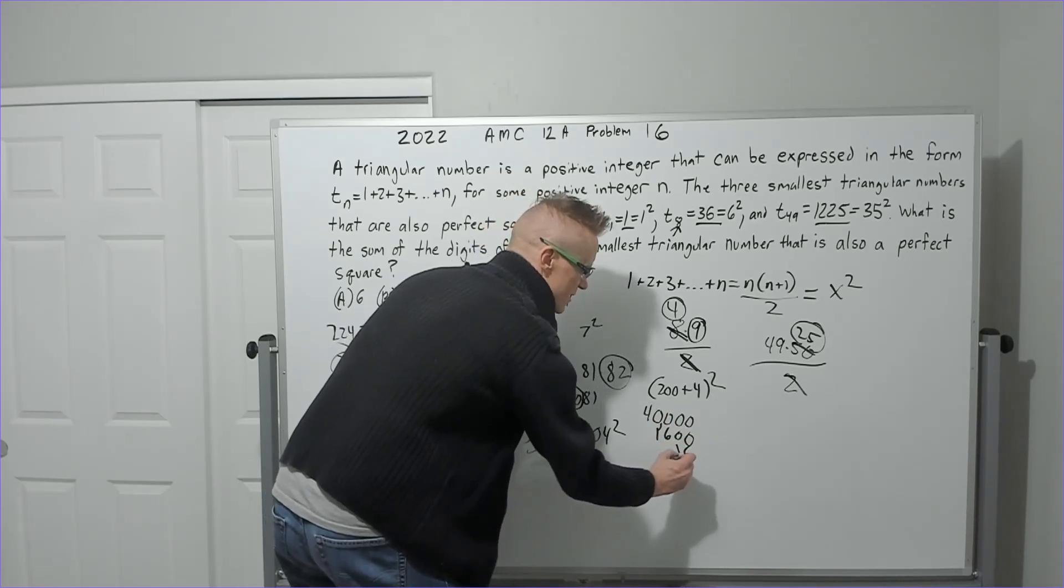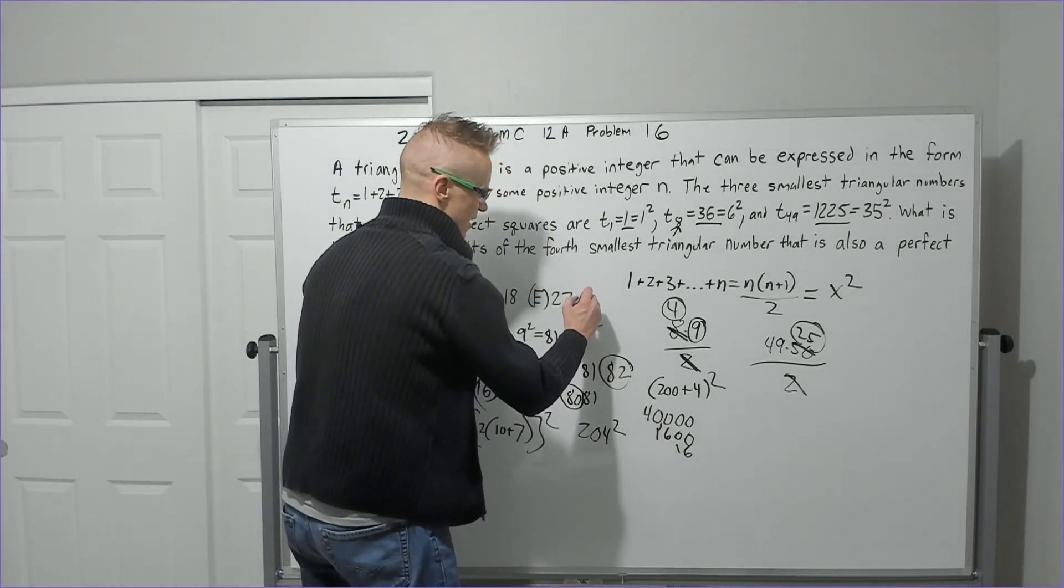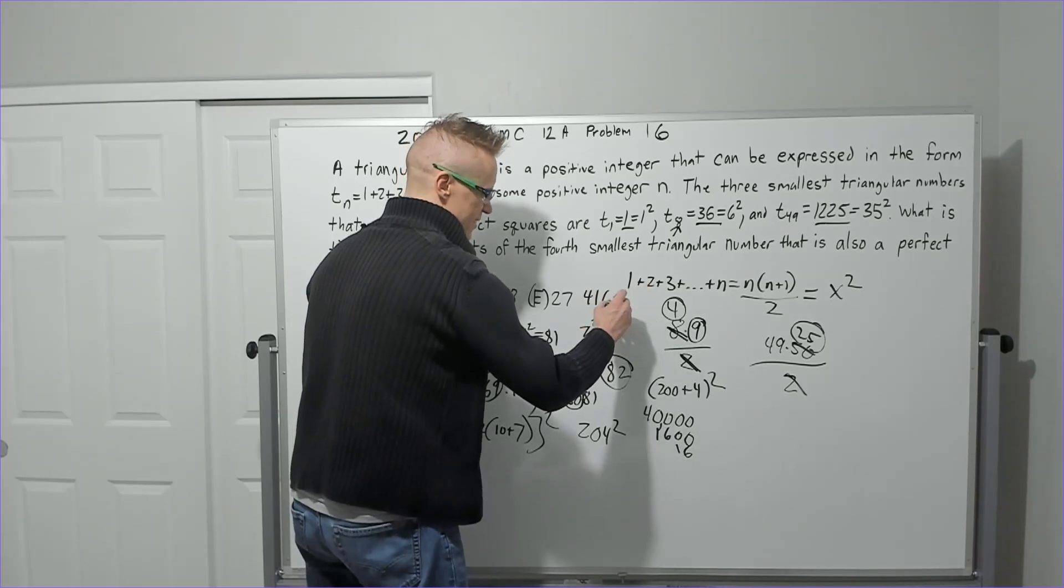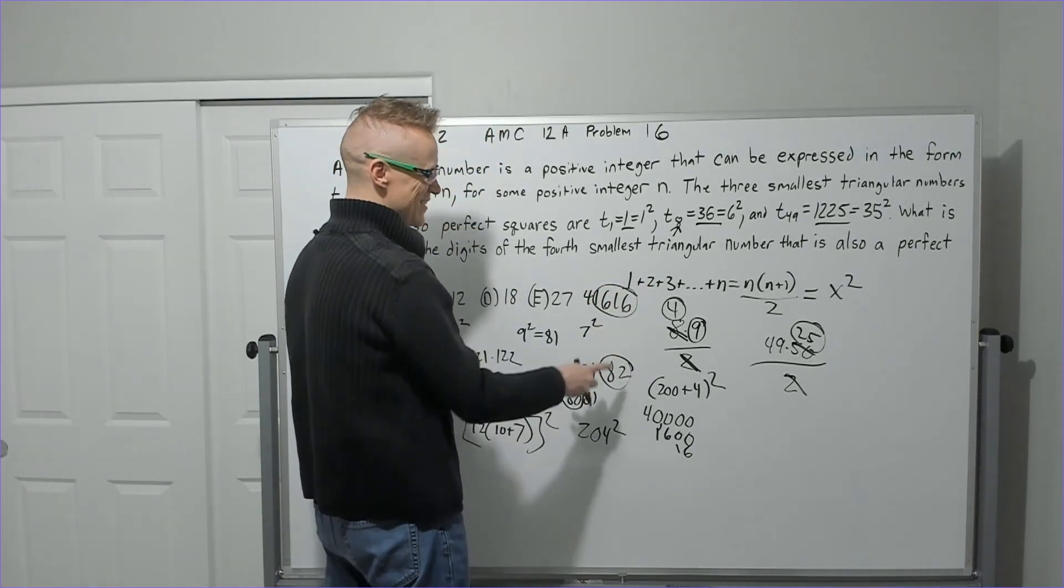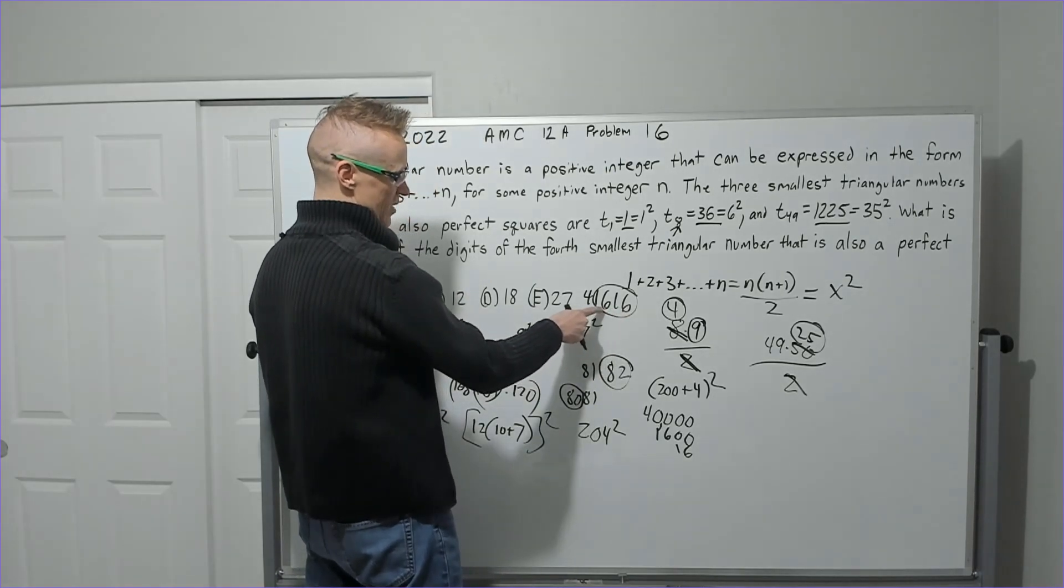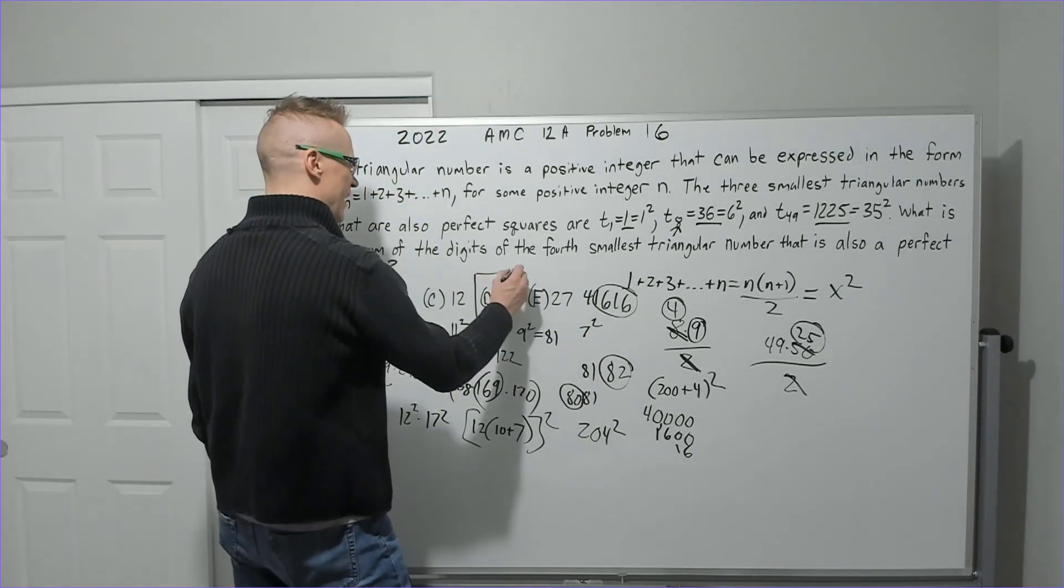The final number: 41,616. 16 plus 16, 6 plus 1 is 7, plus another 7 is 14, plus 4 is 18. Answer choice D.